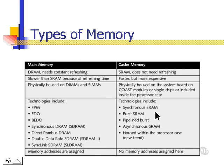Technologies for cache RAM include synchronous SRAM, burst SRAM, pipeline burst SRAM, asynchronous SRAM, and new types of RAM that are housed within the processor case.